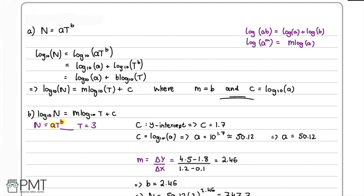Looking back at the mark scheme: part a was worth two marks. The first mark was awarded for applying the first log law to get log₁₀(a) plus log₁₀(t to the power of b). The second mark was for applying the second log law and correctly concluding that m equals b and c equals log₁₀(a) — both m and c were required for the second mark.